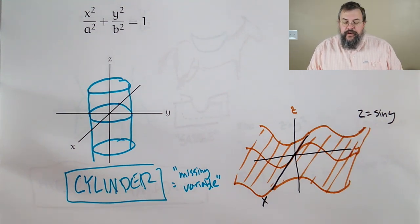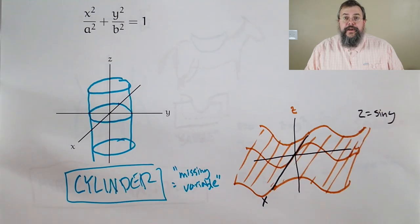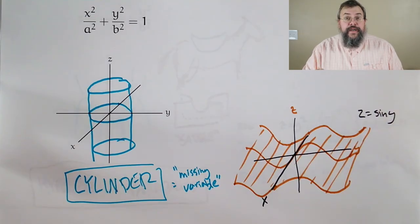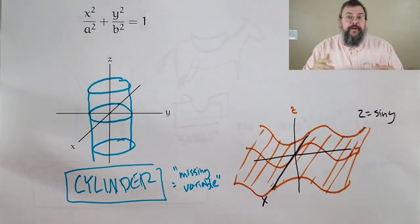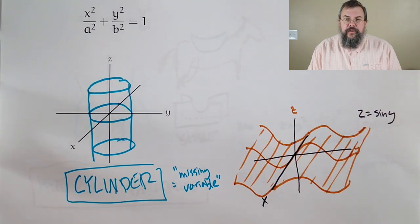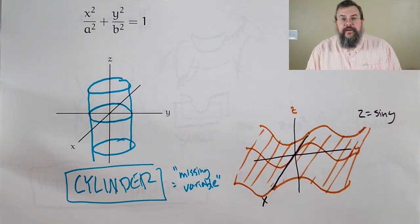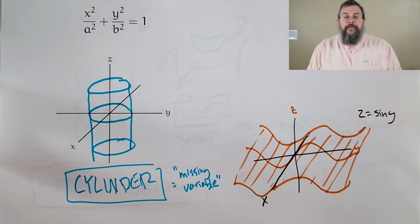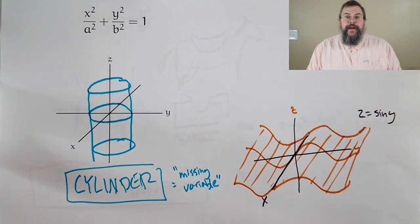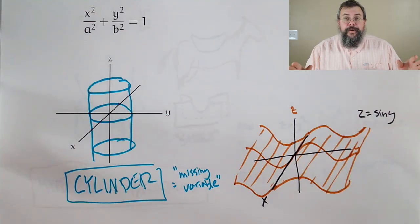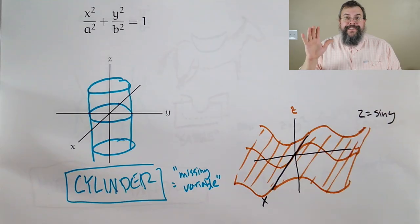These are a collection of surfaces we're going to be seeing many times, especially the bowl and the saddle. That's going to be a really important discussion when we start getting into understanding local behavior of surfaces. But for now, we're done for today. Hope you have a great day!